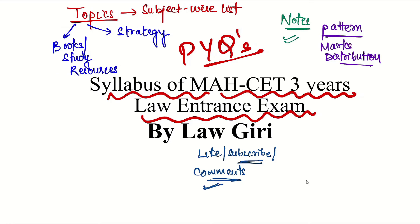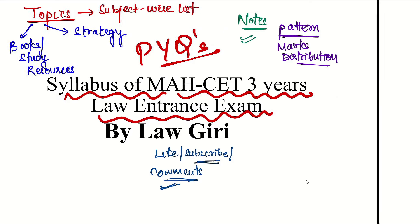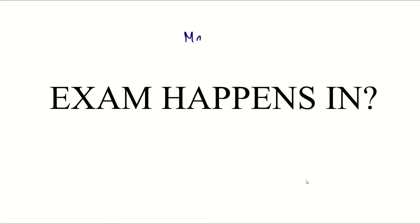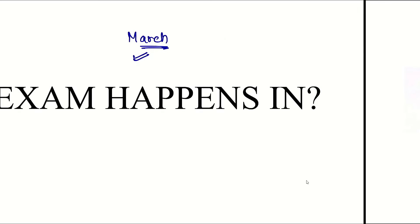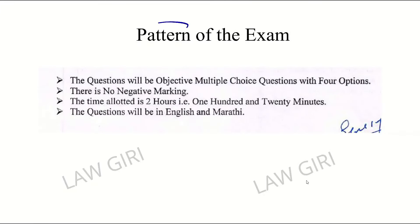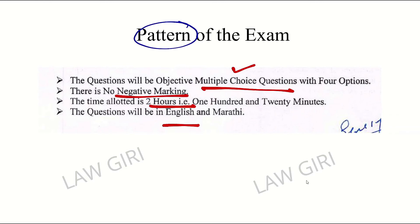When does the exam happen? Your exam starts early — it is in March. Dates come in December, forms also come out in January, and the exam happens in March. Regarding the pattern: there are multiple choice questions, no negative marking, two hours duration, and the paper is in English and Marathi.